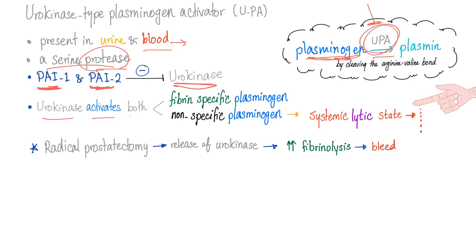Urokinase activates both the fibrin-specific plasminogen and the non-specific plasminogen. So this will lead to a systemic lytic state, increasing your risk of bleeding.